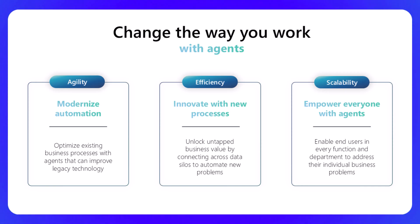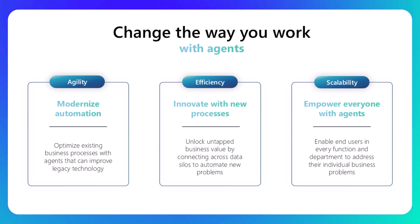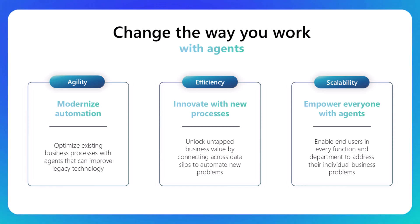And I always describe it in three ways. The first one: how can you and your organization be even more agile by modernizing your existing automation — whether it's Power Automate flows — and bringing them into an agent experience that's much more dynamic and can deal with non-deterministic scenarios, where it's not always a straight path and needs to provide some reasoning and decision making to help resolve that business problem.